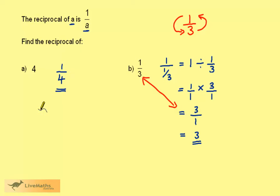This is not different to this situation. 4 can be written as 4 over 1, and if we turn upside down, we get a quarter.